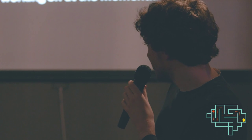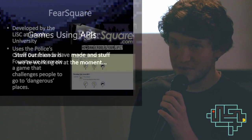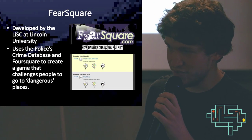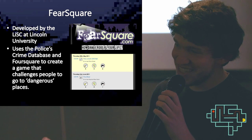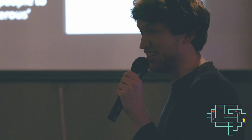So, games using APIs — stuff our friends are working on. This is FearSquare, developed by the LISK at Lincoln University, which uses police data and Foursquare to convince you to go to more dangerous locations. You get a score depending on where you go — like it finds knife crime hotspots and you go there to get a high score. London high score: pit.